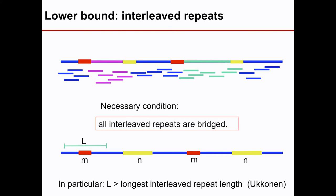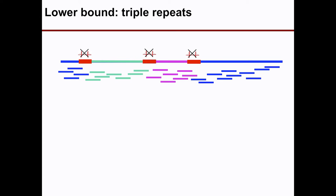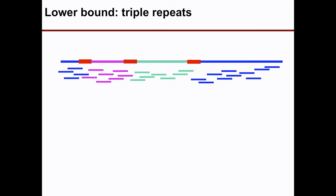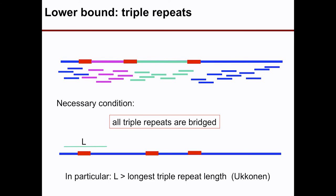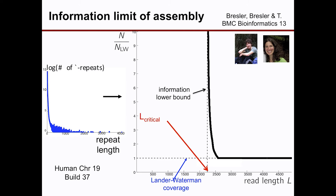The second bottleneck repeat type is triple repeats — X, X, X. If you have a triple repeat that is not bridged, you can again do a swap creating ambiguity. The necessary condition is that all triple repeats are bridged, so L must be greater than the longest triple repeat length. The information lower bound curve is computed by calculating the probability of these non-bridging events. The important thing is these bridging conditions — they determine the curve.